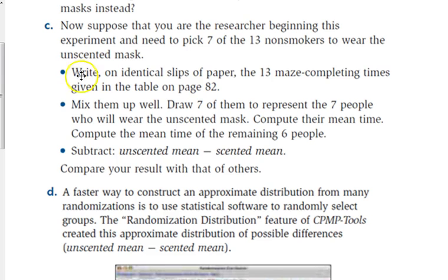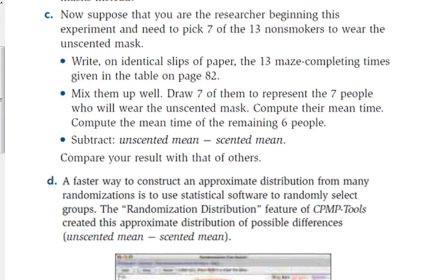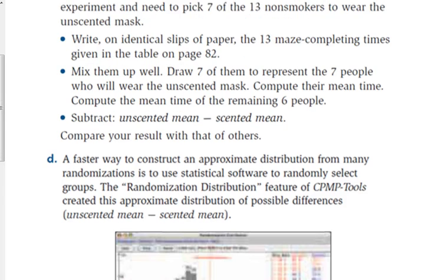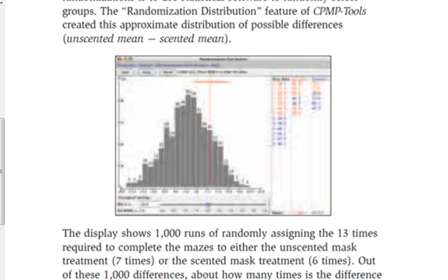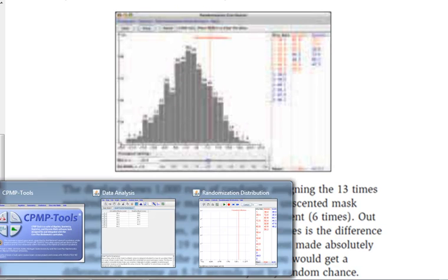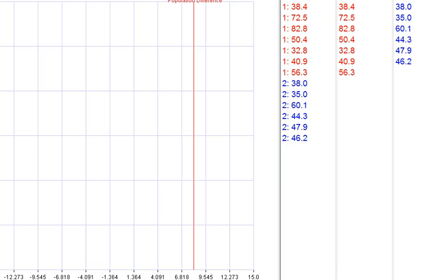But according to the data, most of them took less time, so obviously this would take a really long time to do this bunch of times. So what we can do is there's a statistical tool called a randomization distribution. I think I'm going to take us to the computer lab on Friday because we can't do this on the Chromebooks, but I do have it on my computer so I can show you what happens here.